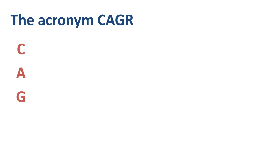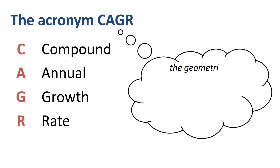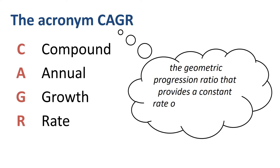What does the acronym CAGR stand for? CAGR, sometimes pronounced as CAGR, is Compound Annual Growth Rate. If you look up the textbook definition of CAGR, it will tell you that CAGR is the geometric progression rate that provides a constant rate of return over the time period. Personally, that doesn't tell me much yet, so let's park that CAGR definition for later use.